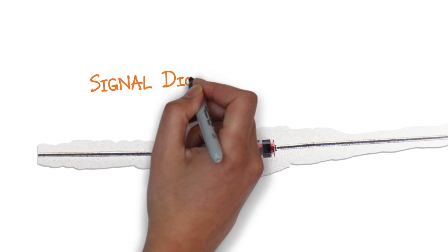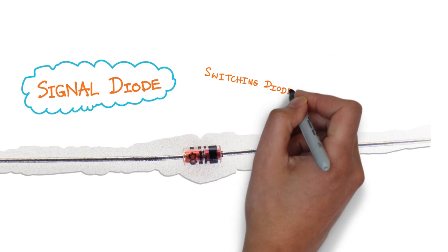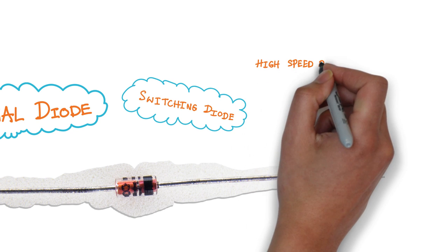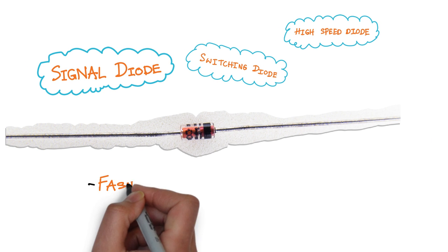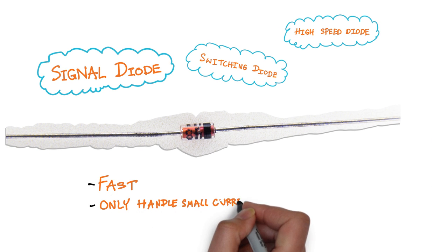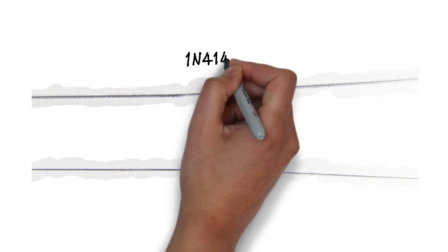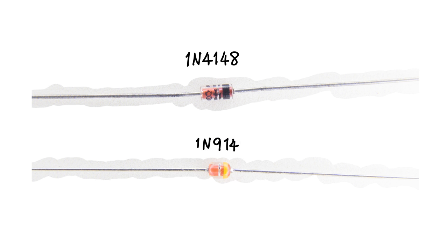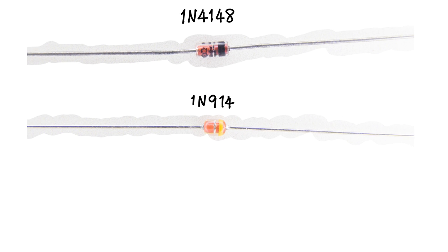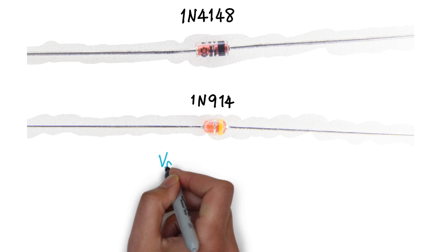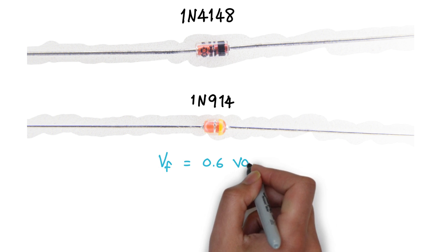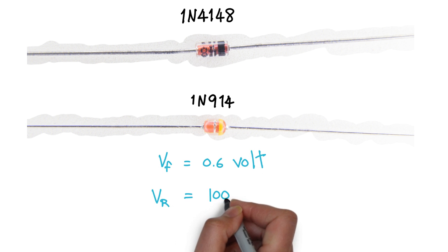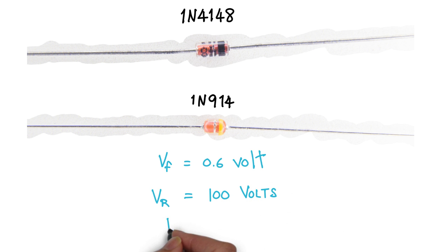Signal diodes, also known as switching diodes or high speed diodes. These type of diodes are designed to be fast, but can only handle small current flows. The most commonly used is the 1N4148 and 1N914. These two diodes are quite similar and can be used interchangeably. They have a forward voltage drop of 0.6 V and peak reverse voltage of 100 V. They can carry a maximum current of 200 mA.